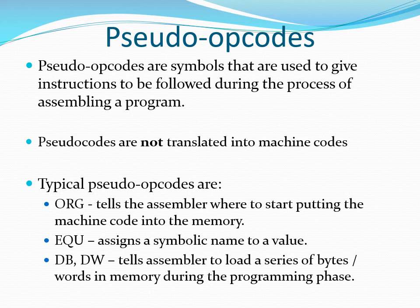Typical pseudo opcodes include: ORG, which tells the assembler where to start putting the code in memory — either program code or data items. The equate statement, which is used to assign a symbolic name to a numerical value. DB and DW, which are used to tell the assembler to load a series of bytes or words into memory during the programming phase — DB is used for loading bytes, and DW is used for loading words.